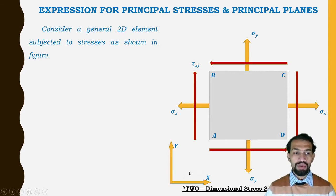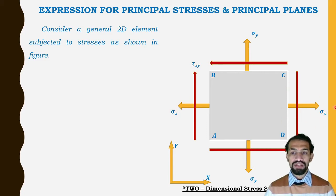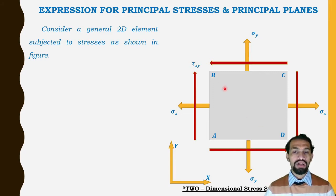The stresses acting on the element are σx, σy, and shear stress τxy, with x and y coordinates. The AB face carries σx, the CD face also carries σx, the BC face carries σy, and the AD face carries σy. Shear stress τ is acting on these faces, producing a diagonal tension component.